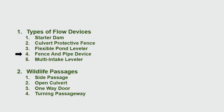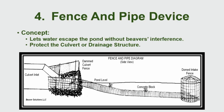Now I'm going to move on to the fence and pipe device, which is essentially the same thing as a flexible pond leveler. The only difference is we put a protective fence around the culvert, designed so beavers will dam on it — they'll hear the water flowing through the pipe and dam onto the fence — but the pipe still controls the water level going from the pond into the culvert.